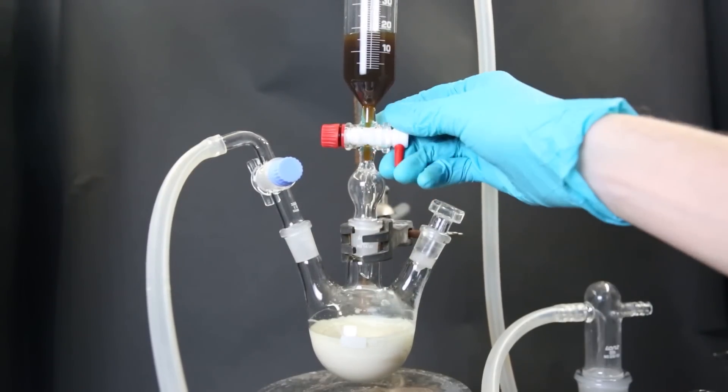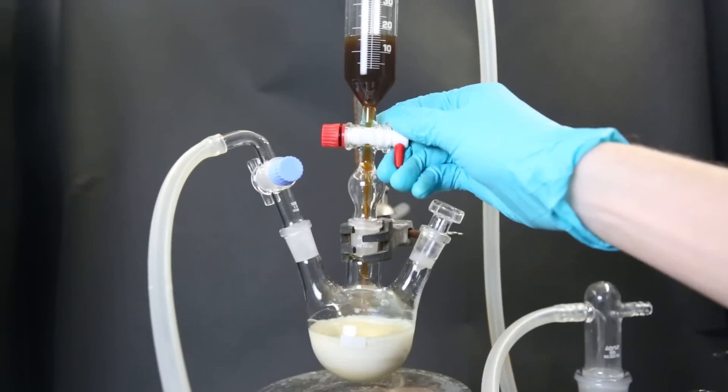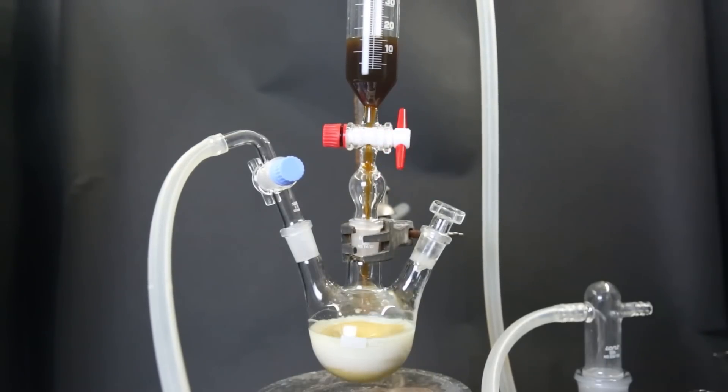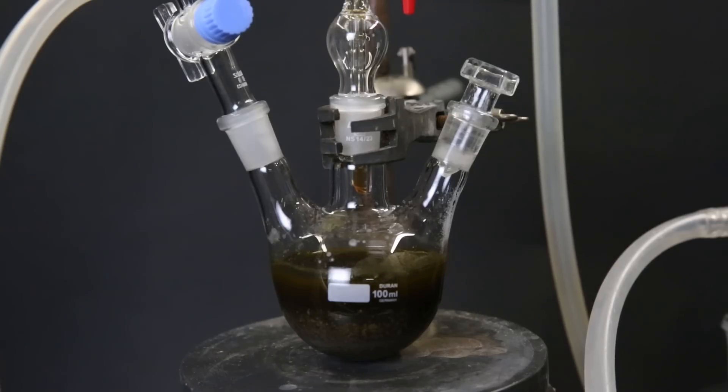I open the dropping funnel and slowly drip in the iron(II) chloride solution. The reaction mixture quickly turns orange, and after everything was added and left to stir for a while, it turned almost black.